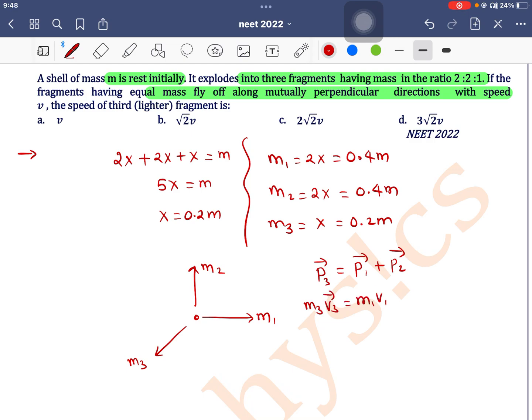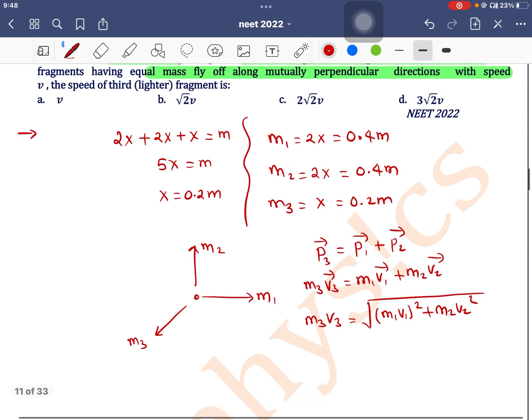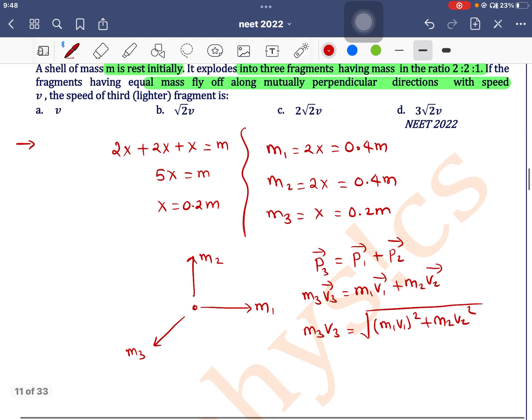Or m₃v₃ = √(m₁²v₁² + m₂²v₂²). So we can write here m₃ is 0.2m into v₃ is equal to m₁ is 0.4m, v₁ is v...